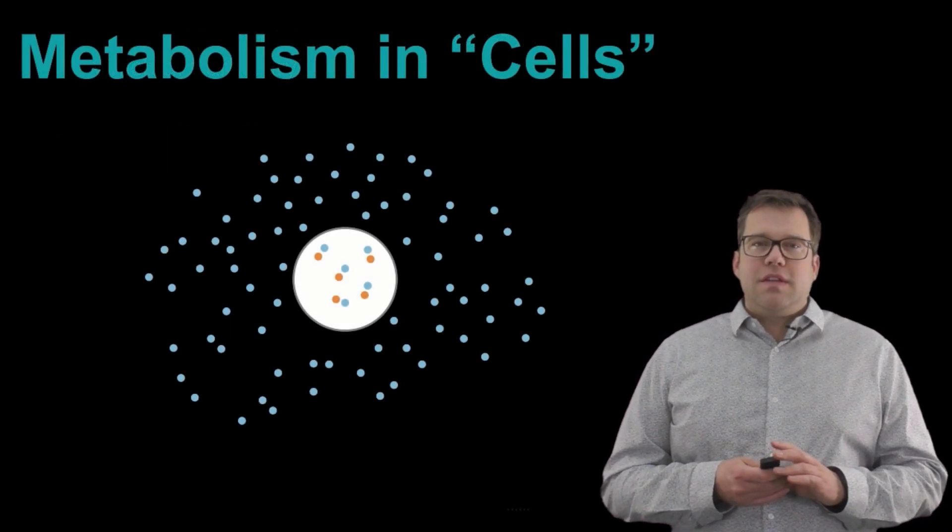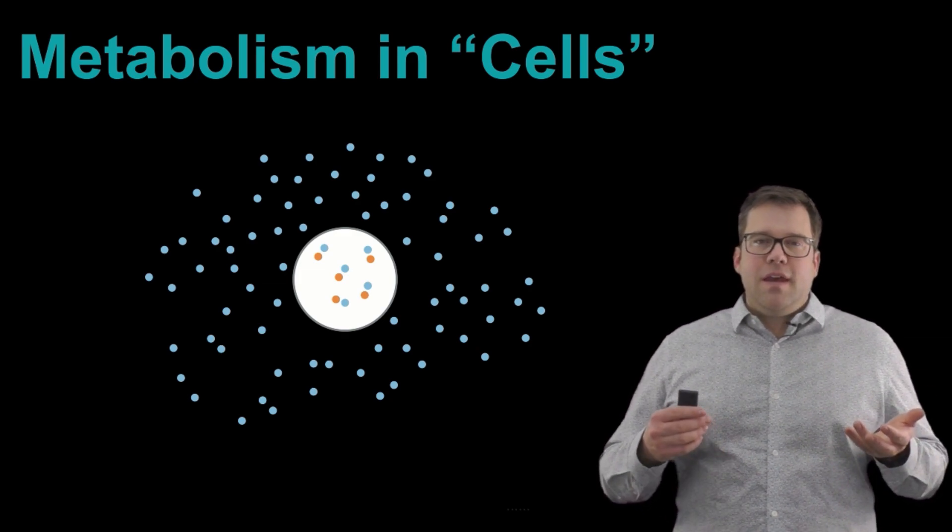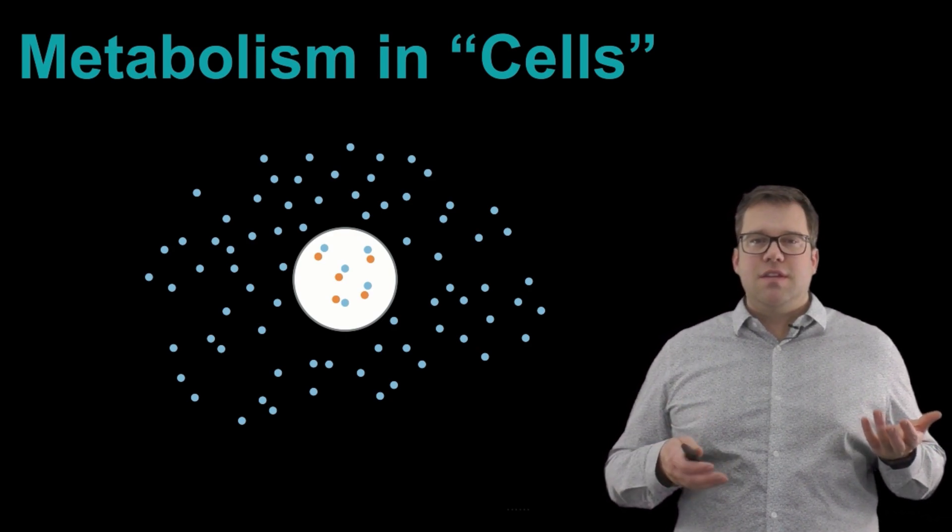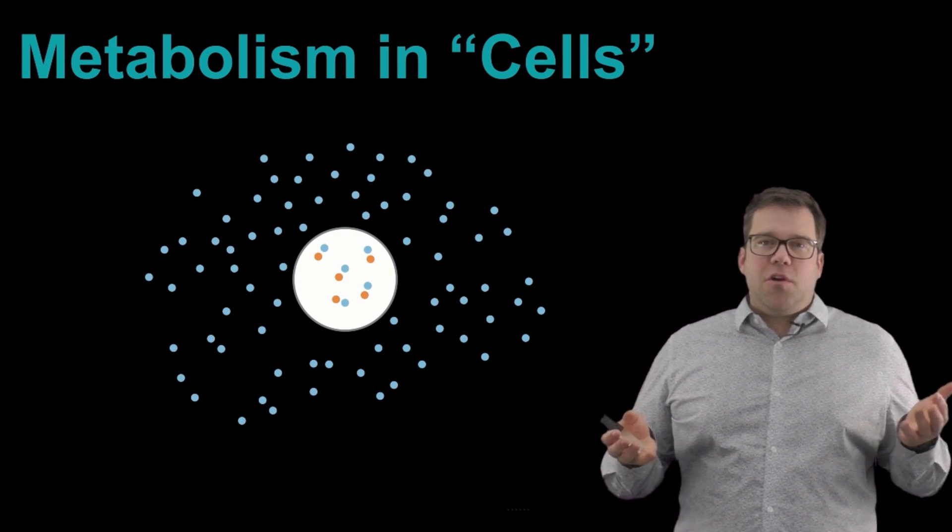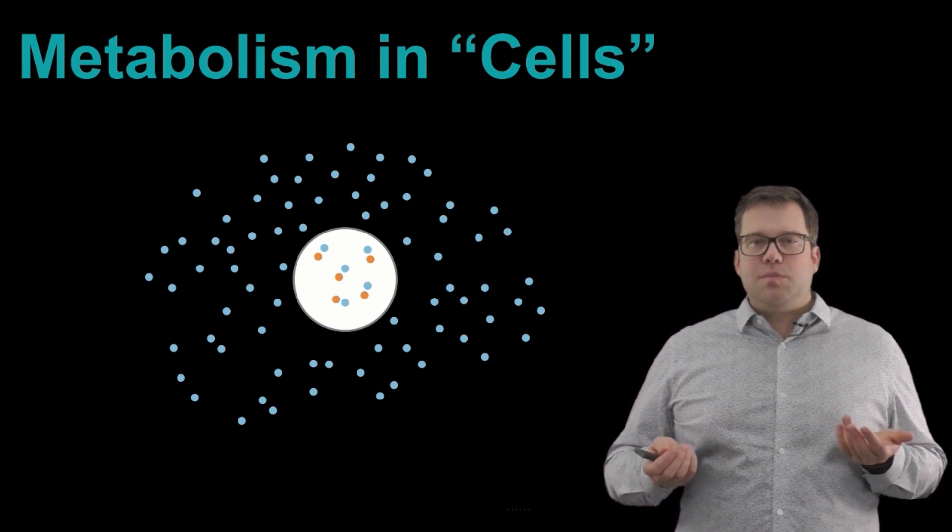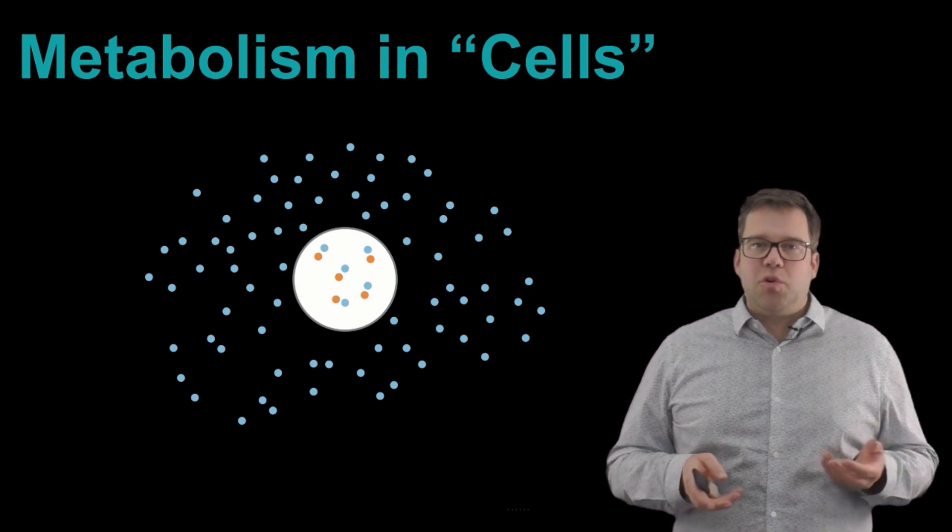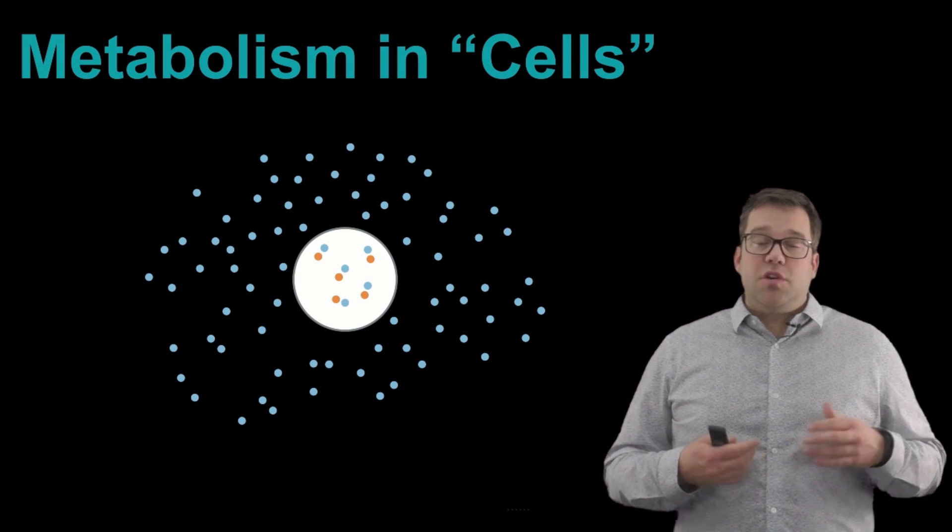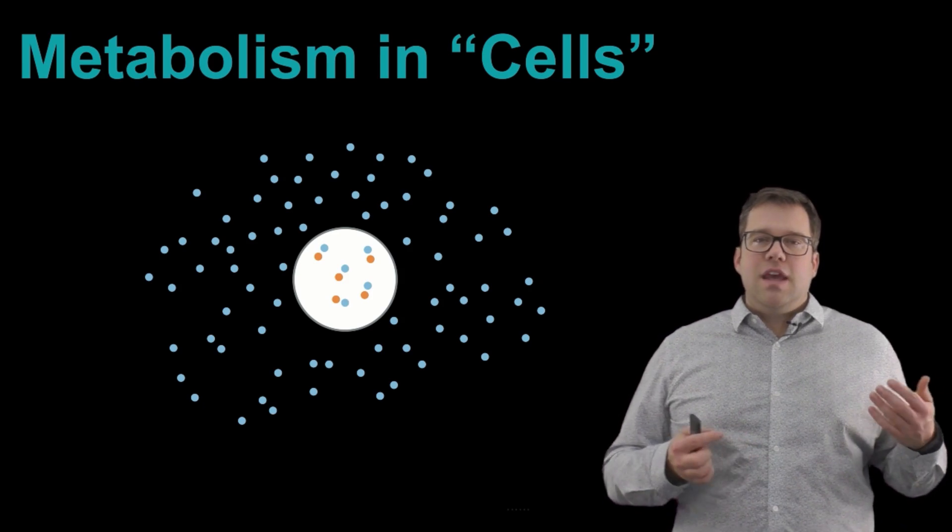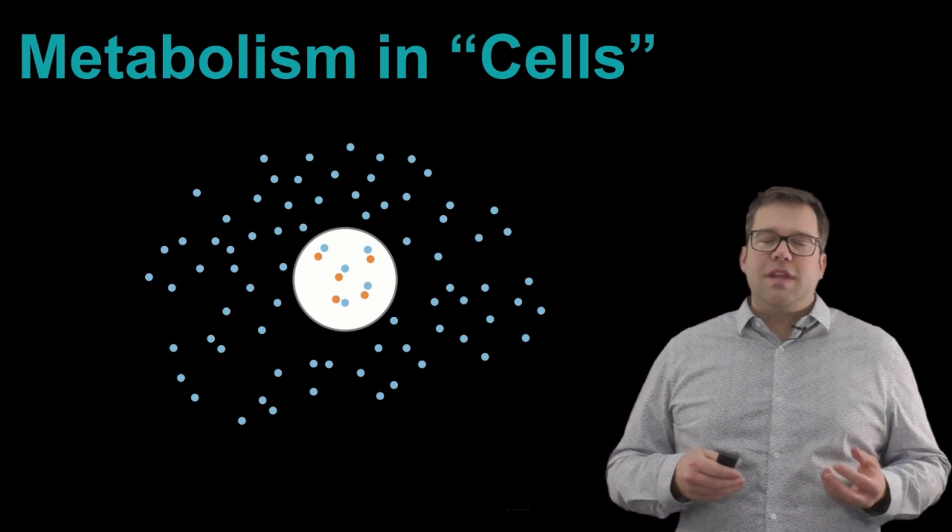So what we're going to think about today is imagine you have this spherical cell in the middle of the screen and it's surrounded by a variety of nutrients that it needs. So these are essential nutrients. You can see outside the cell, there are all these blue particles, which is some nutrient. And then inside the cell, there's some amount of these blue particles in connection with these orange particles. And that's just to symbolize some sort of chemical reaction. So the cell has some internal chemistry that's different from the outside environment.